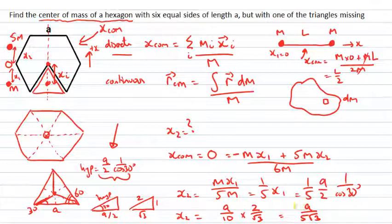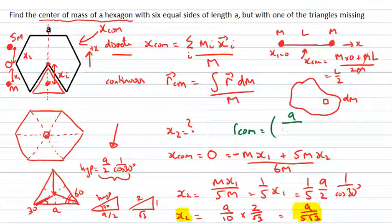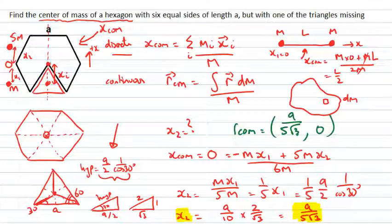So x2 = a/(5√3) is the numerical evaluation of the center of mass coordinate for this object. Importantly, that's the x coordinate. Since this is a two-dimensional object, I should report both coordinates: the x coordinate is a/(5√3), and the y coordinate is zero, taking the origin at the center of the object.